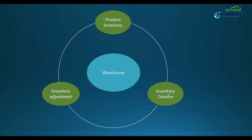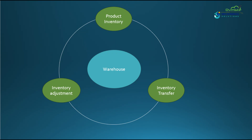Inventory Transfer is when you move a product from one warehouse to another. Inventory Adjustment lets inventory managers change the number of products in a warehouse. We use inventory adjustments to manually add inventory to a warehouse or subtract inventory from a warehouse.